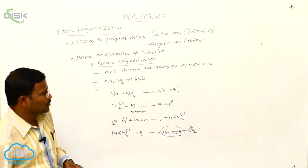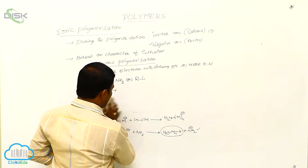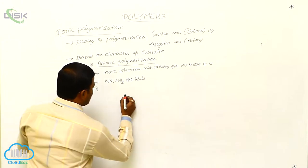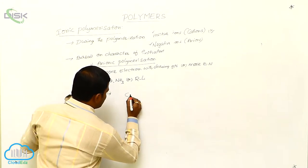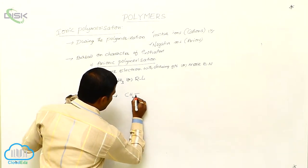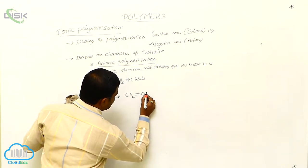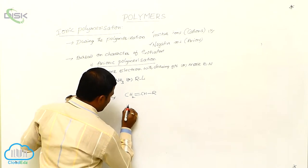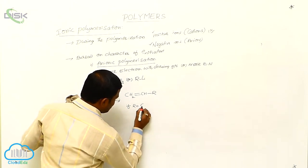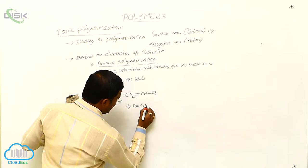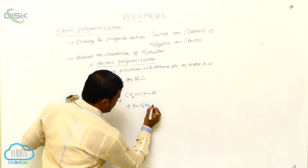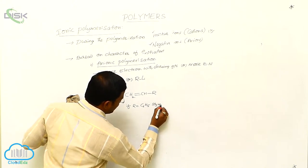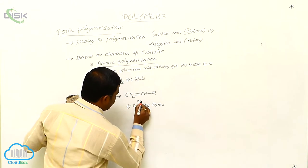Let us consider one more example for anionic polymerization by using alkylithiums. Generally, alkylithiums react with CH2 double bond CHR. If R equals C6H5, then it is called styrene. We can consider styrene as the monomer.